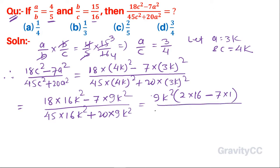45×16k² + 20×9k². This equals 18×16k² - 7×9k² = 9k²(2×16) - 7×1 over 45×16k² + 20×9k². We can factor: k² cancels. 9×4 is 36. And 16, 32 minus 7, over 4, 20 plus 5.